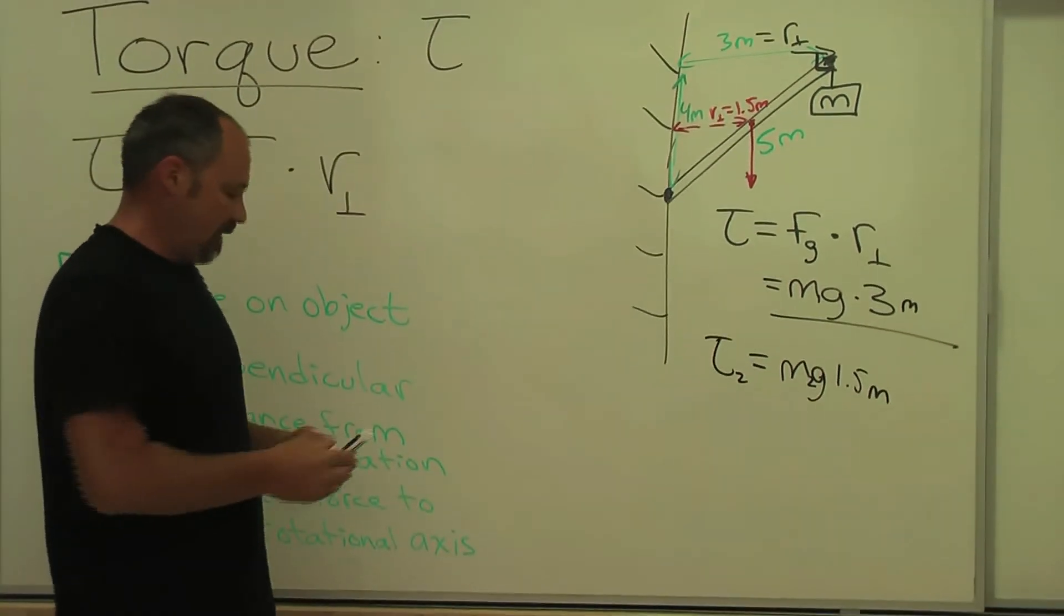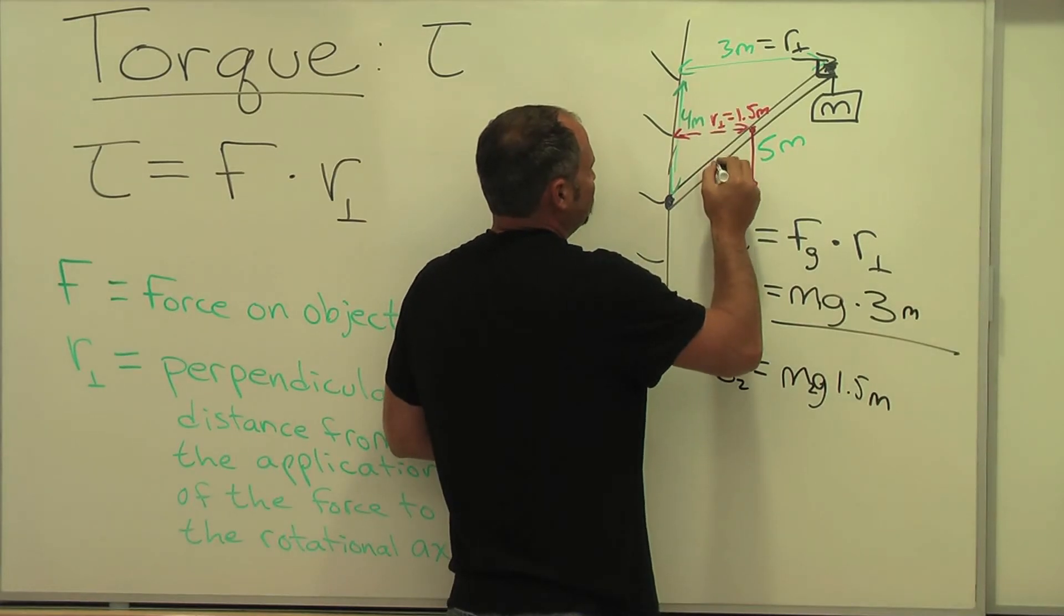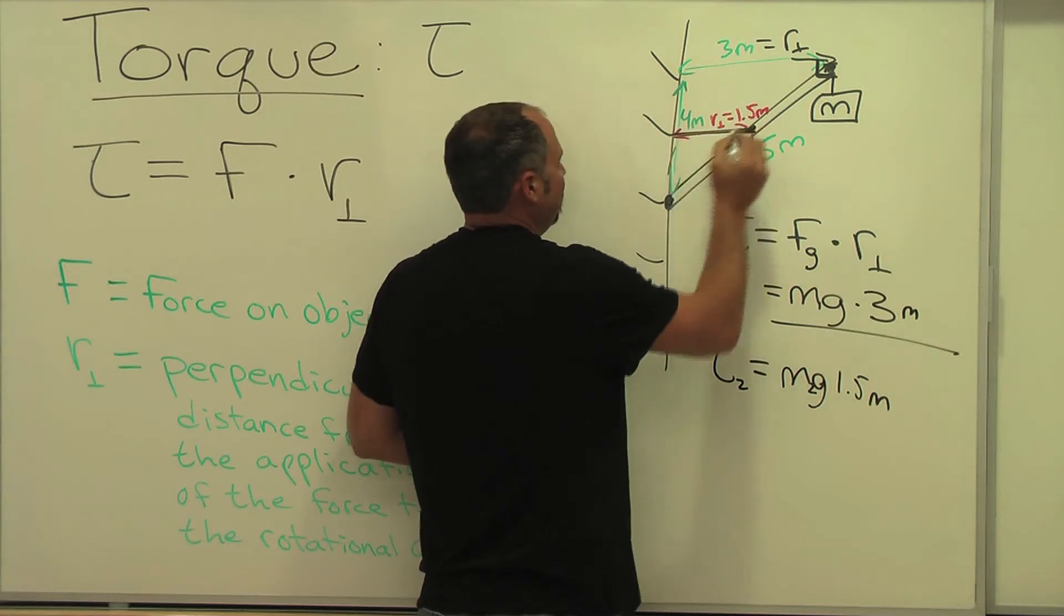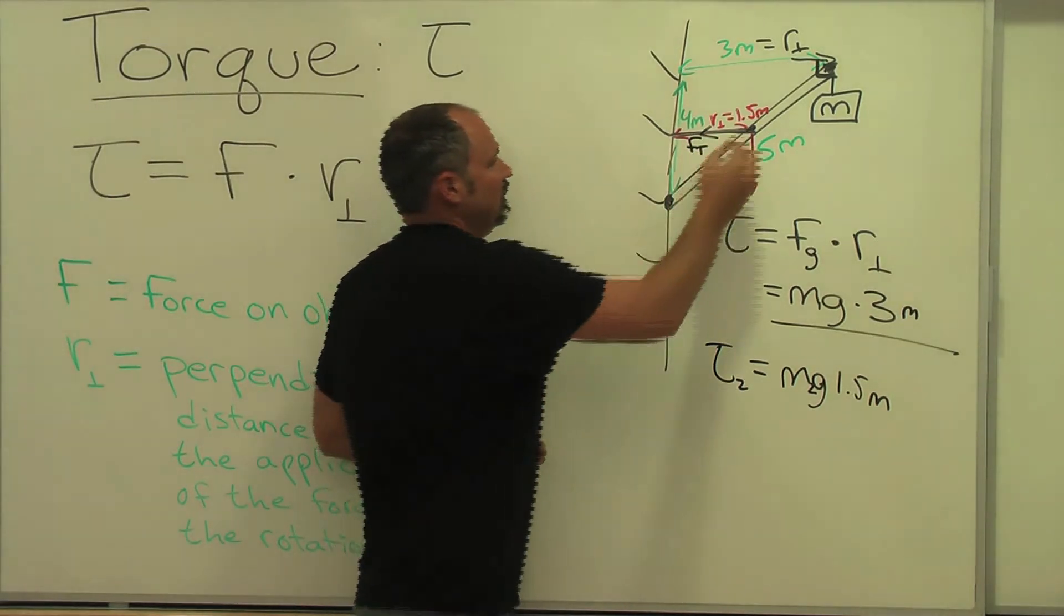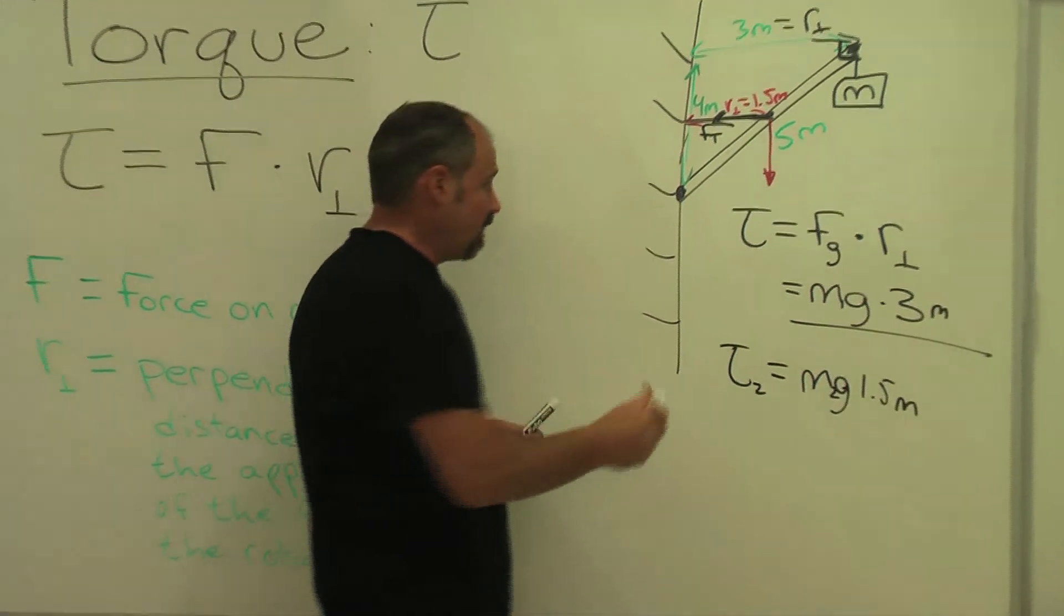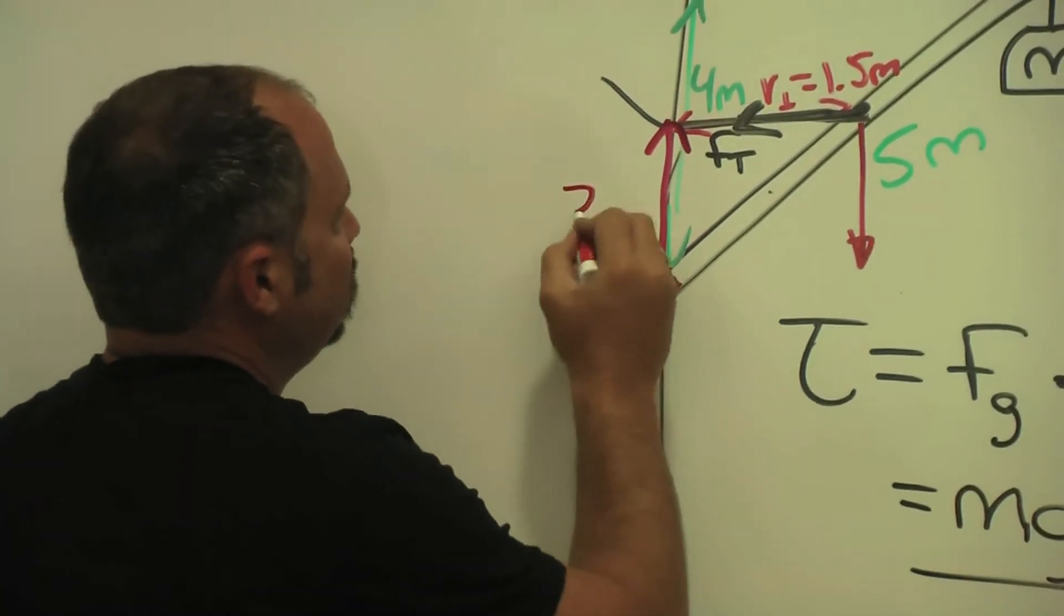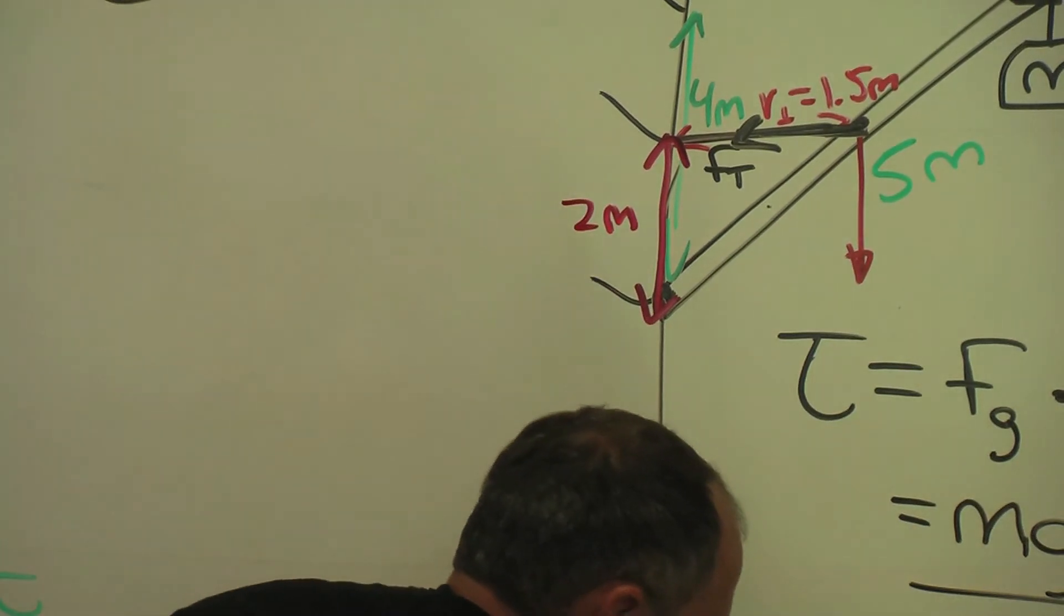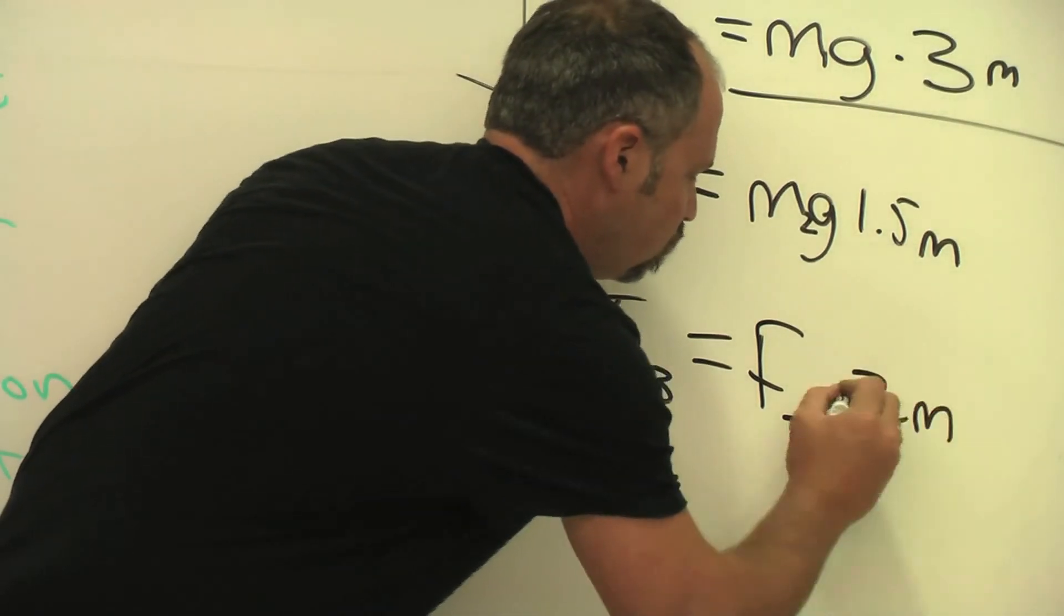Now, if I wanted to attach a string here, we could put it, oh, let's just put it right here, for example. Well, we'll put it right at the center of mass. Let's say there's a string. I'm going to hold it up. How about that? Well, the string has a tension force in that direction. So the direction of the force is this way. So now the perpendicular distance that I'm interested in is this distance here. And that would be 2 meters. So we call that torque 3. So the torque from the string would be the tension force multiplied by 2 meters.